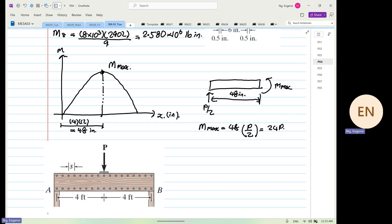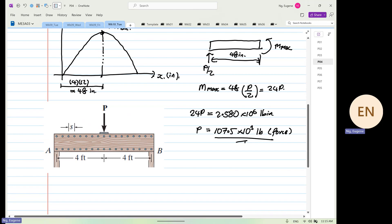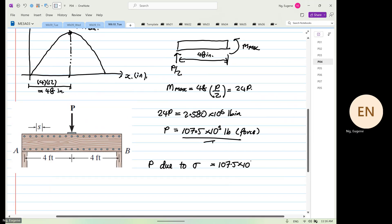So with that 24P will be equal to 2.580 times 10 to power 6 inch pounds. P will be equal to 2.580 times 10 to power 6 divided by 24, will be equal to 107.5 times 10 to power 3 pounds. So if we were to view P, P due to normal stress will be equal to 107.5 times 10 to power 3 pounds.